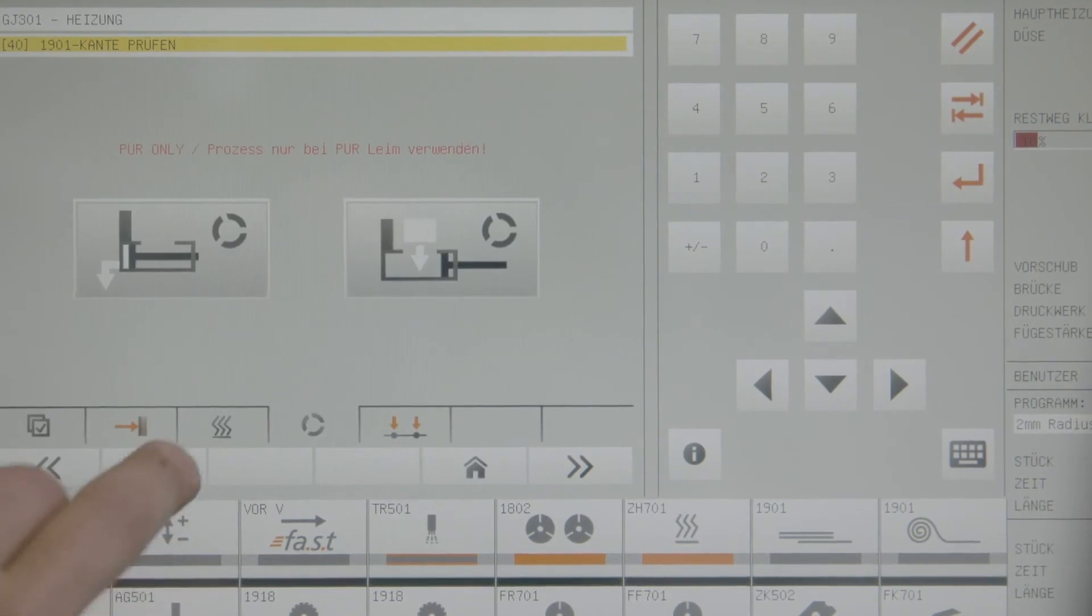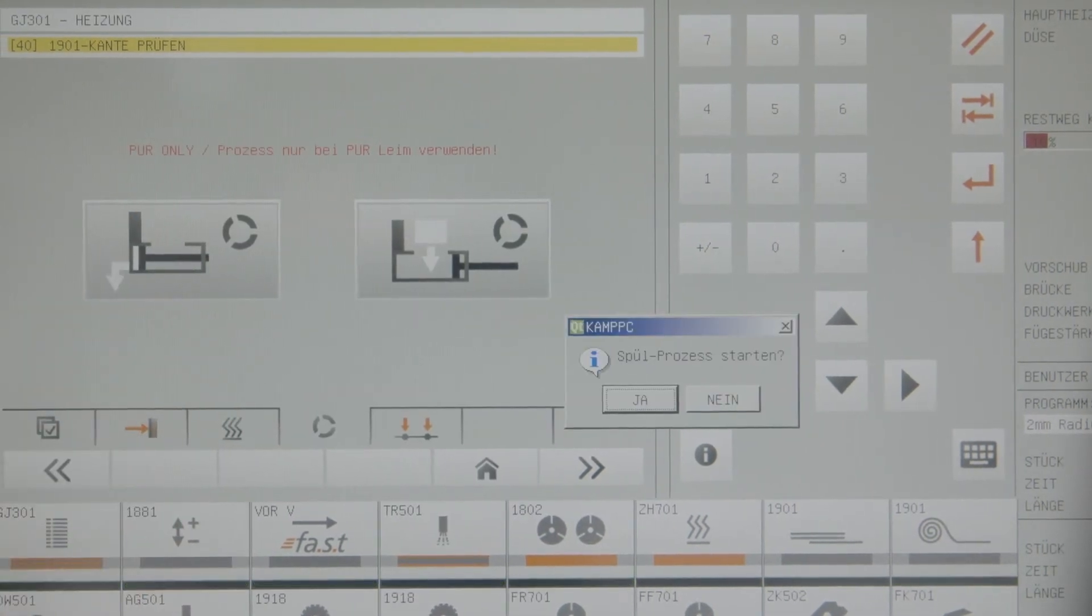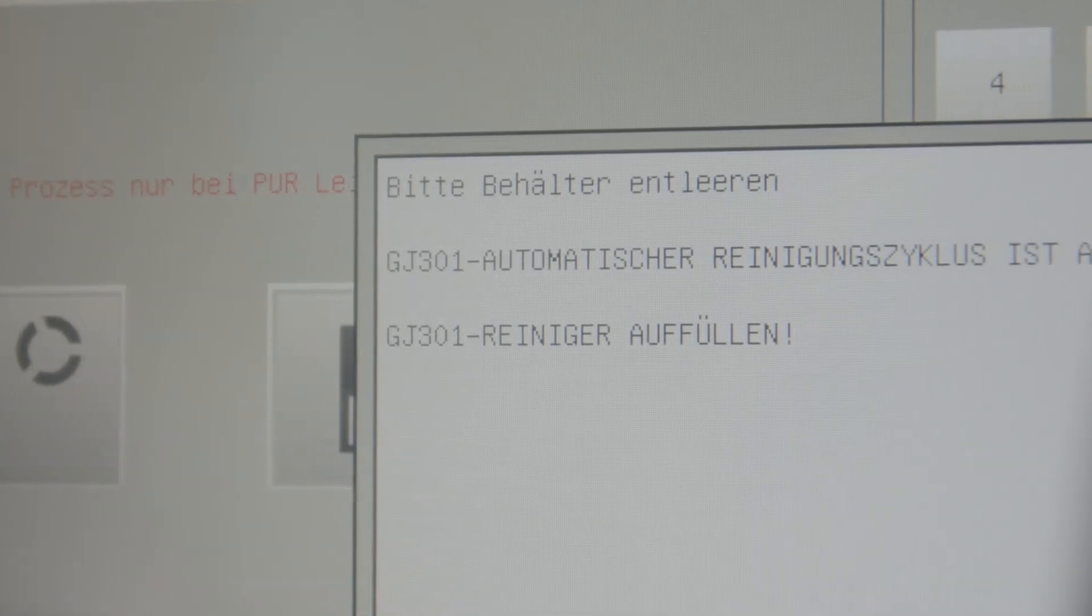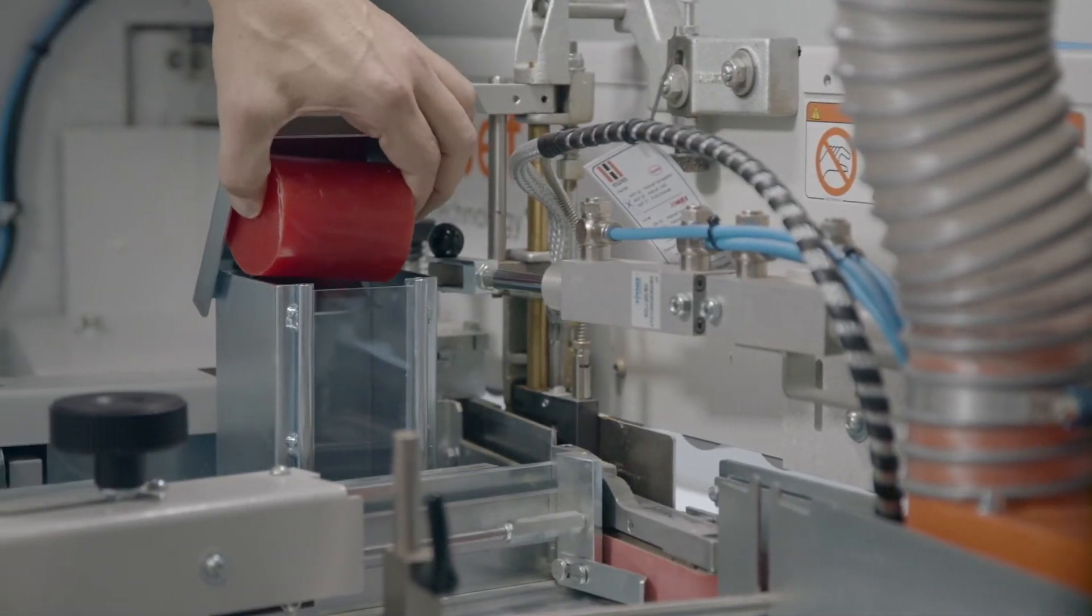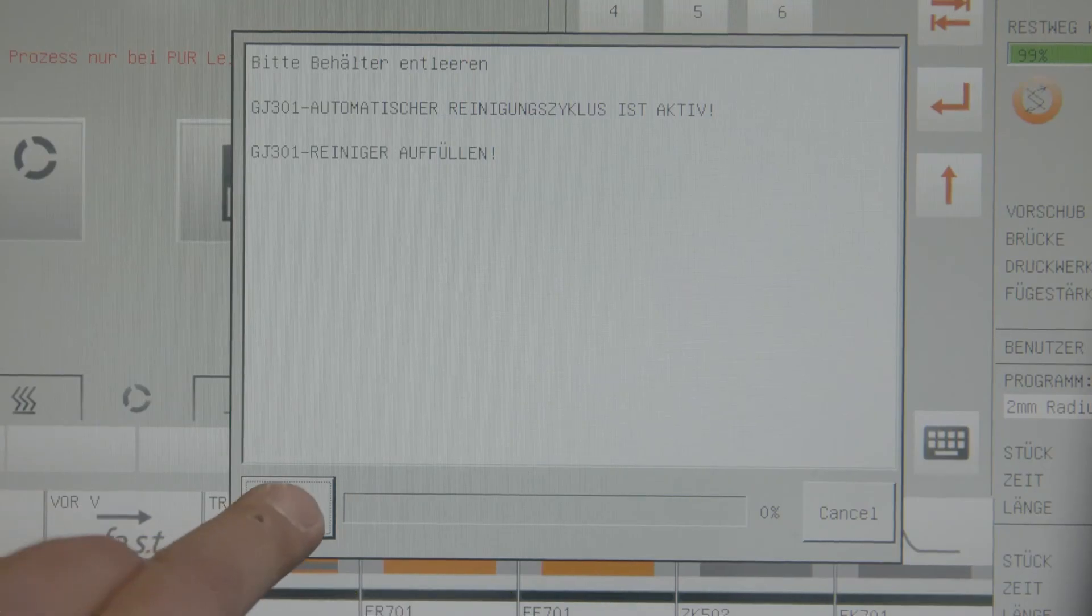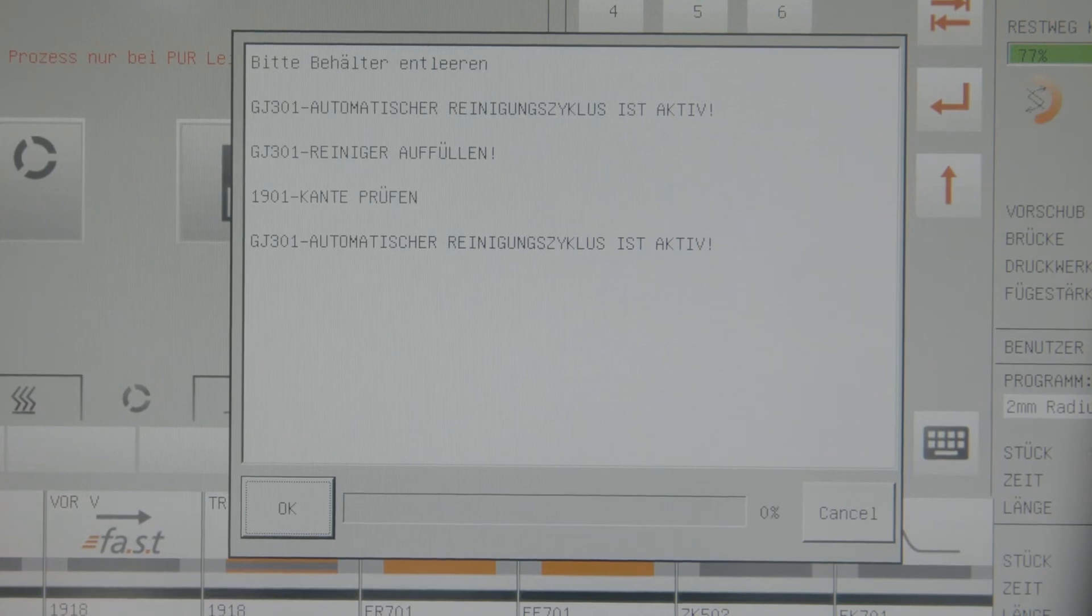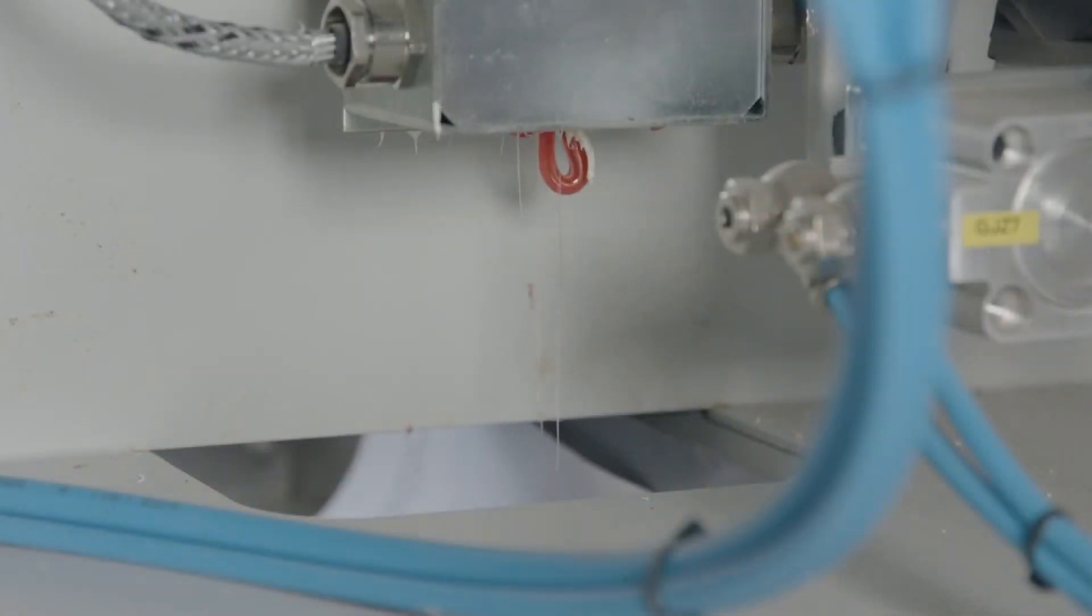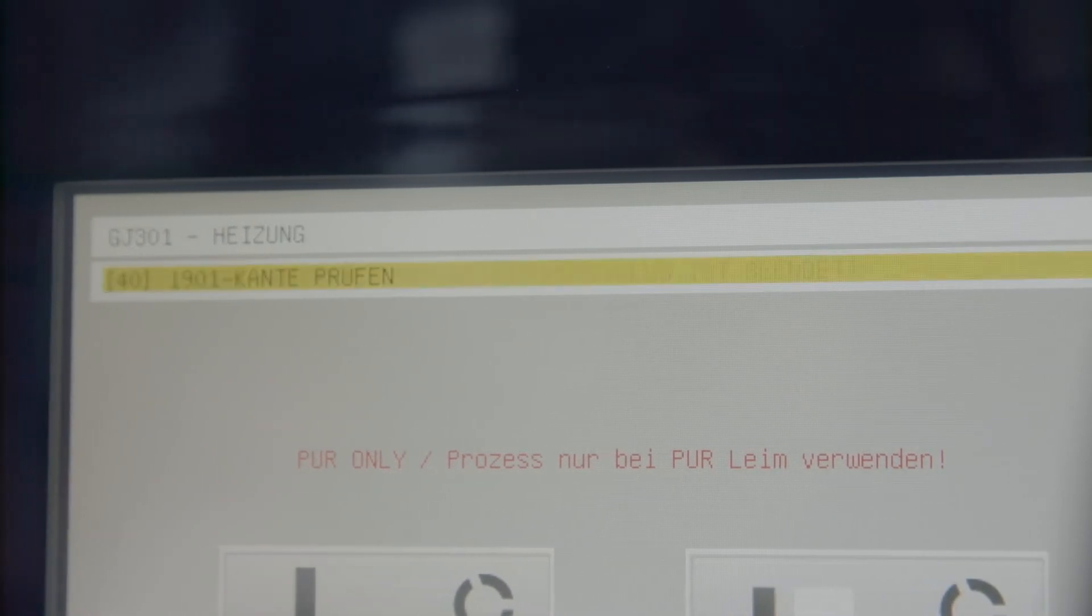Cleaning the system is child's play via a flushing routine that is completely guided by the control unit. The first step is used in a PUR glue can remain in the glue station for up to 48 hours. Afterwards, usually before the weekend, the complete system is rinsed fully automatically with the correct pressure, temperature and amount of cleaner. There is no easier or safer way to handle polyurethane adhesives, making GlueJet the best PUR system on the market.